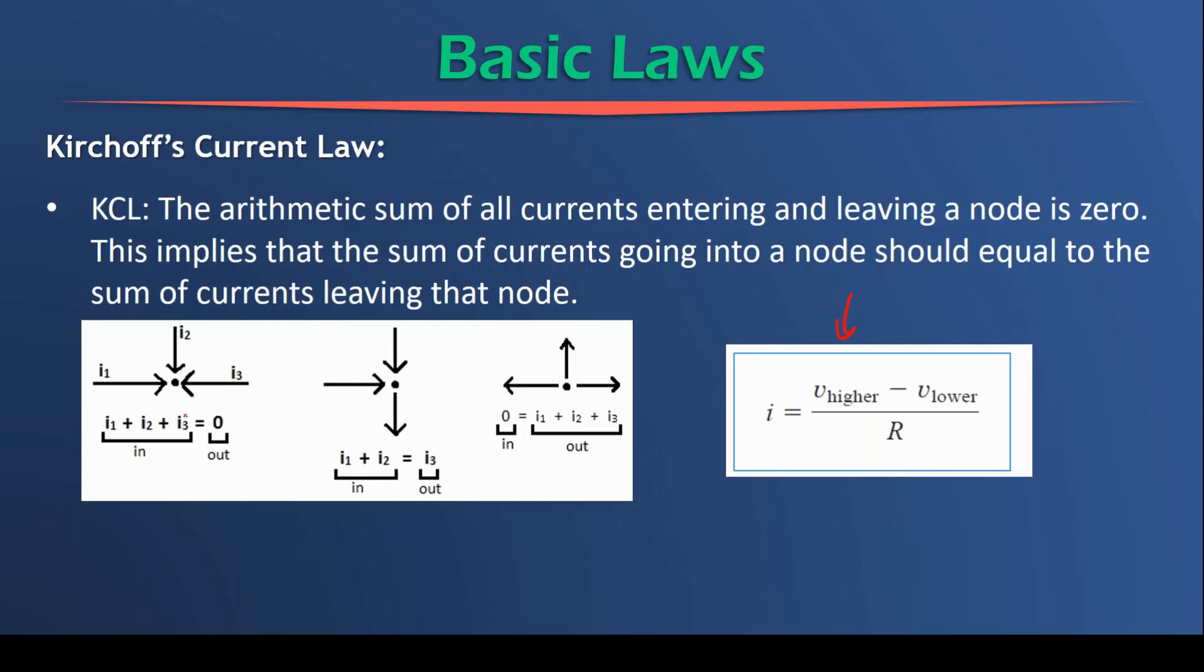So for instance, in the first node, or first example, we can say all the currents are going in. So the sum of the currents, I1, I2 and I3, will give you zero. So all currents are going in, no currents are going out. In the same node, we could have said currents I1, I2 and I3 flow in that formation. So I1 plus I2 go in, and I3 go out. Therefore, I1 plus I2 gives you I3.